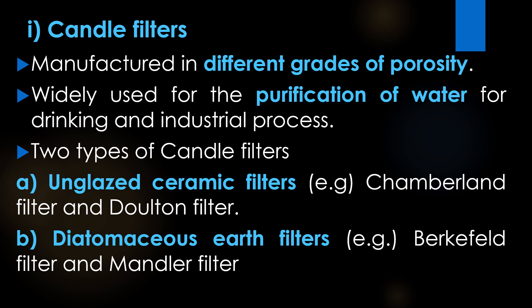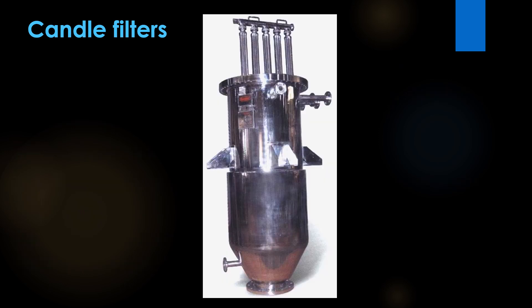Two types of candle filters are available. The first type is unglazed ceramic filters — examples include the Chamberland filter and Dalton filter. The second type is diatomaceous earth filters — examples include Berkefeld filters and Mandler filter. This is the image of candle filters.